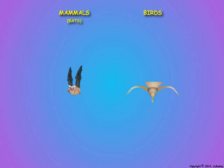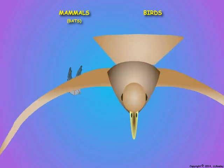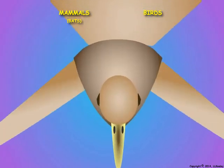The wings of both birds and bats are modified forelimbs, and the muscles that power flight in birds and bats are attached directly to the wings, directly powering the upstroke and downstroke during flight. We will start with birds, as they are the simplest.